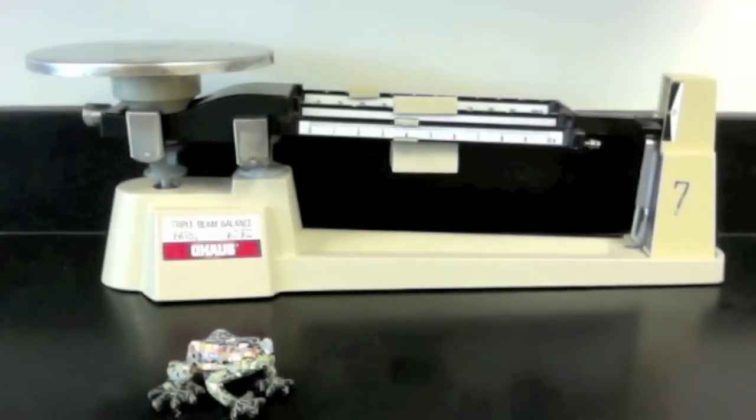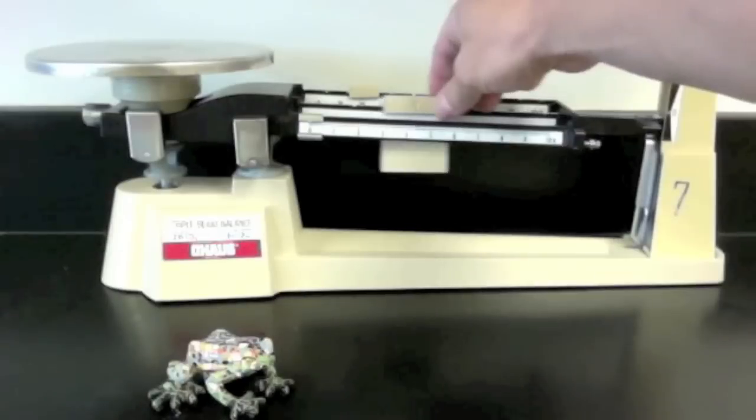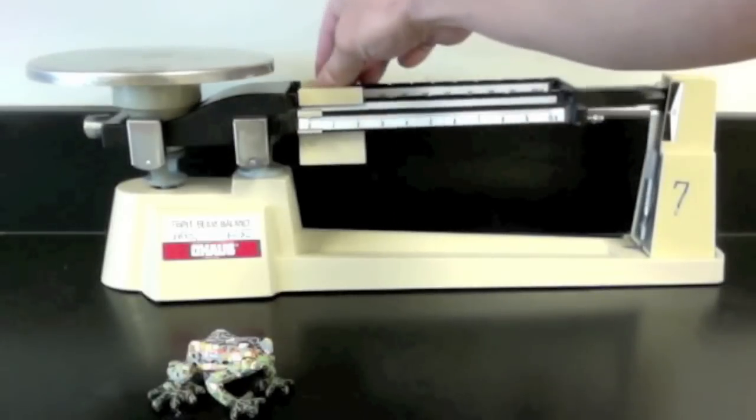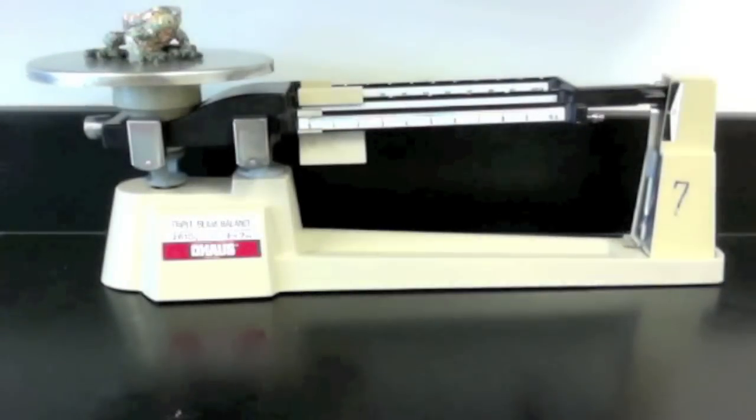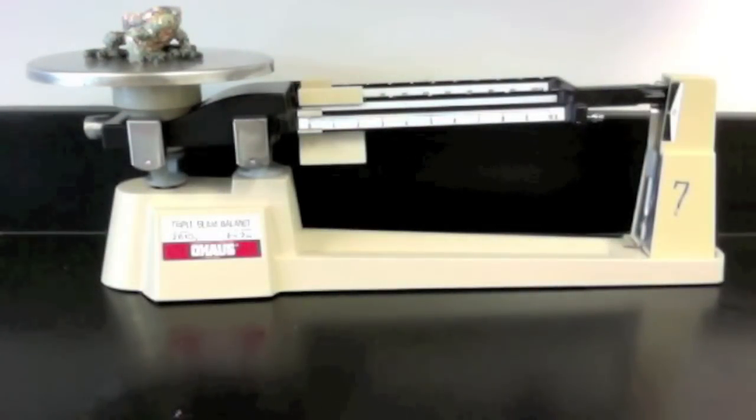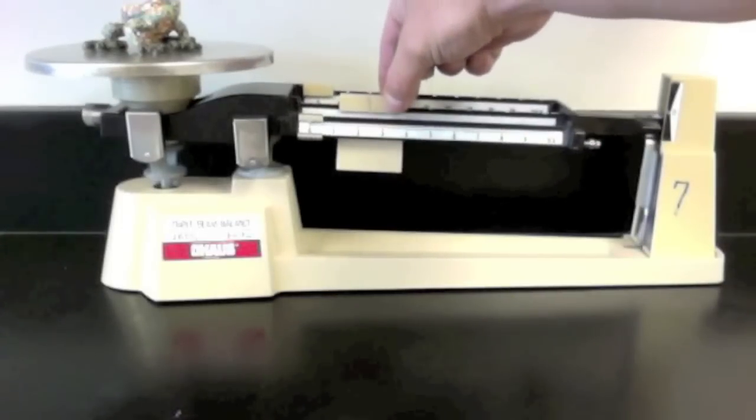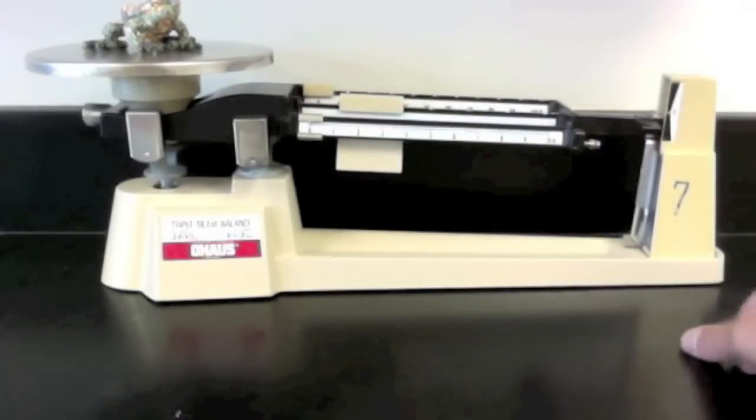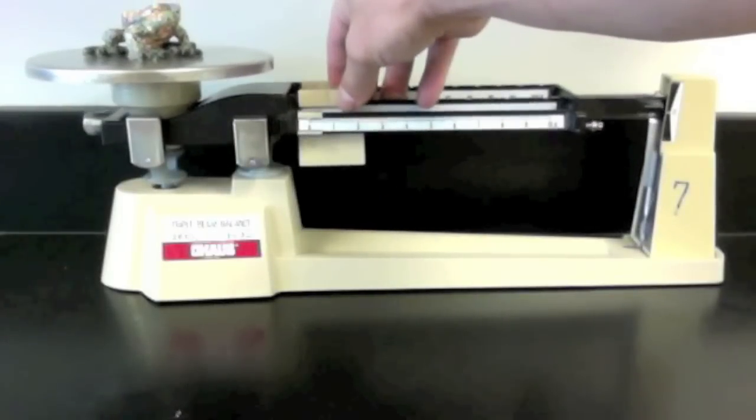In order to find the mass of an object, we need to use a balance scale. This scale is a triple beam balance. To use it, we must have all of the weights slid to the zero. And we place our object that we want to find the mass of on the pan. We move the first counterweight out until it falls. We know from that that the mass of this object is under 100 grams. Therefore, we move it back to zero.